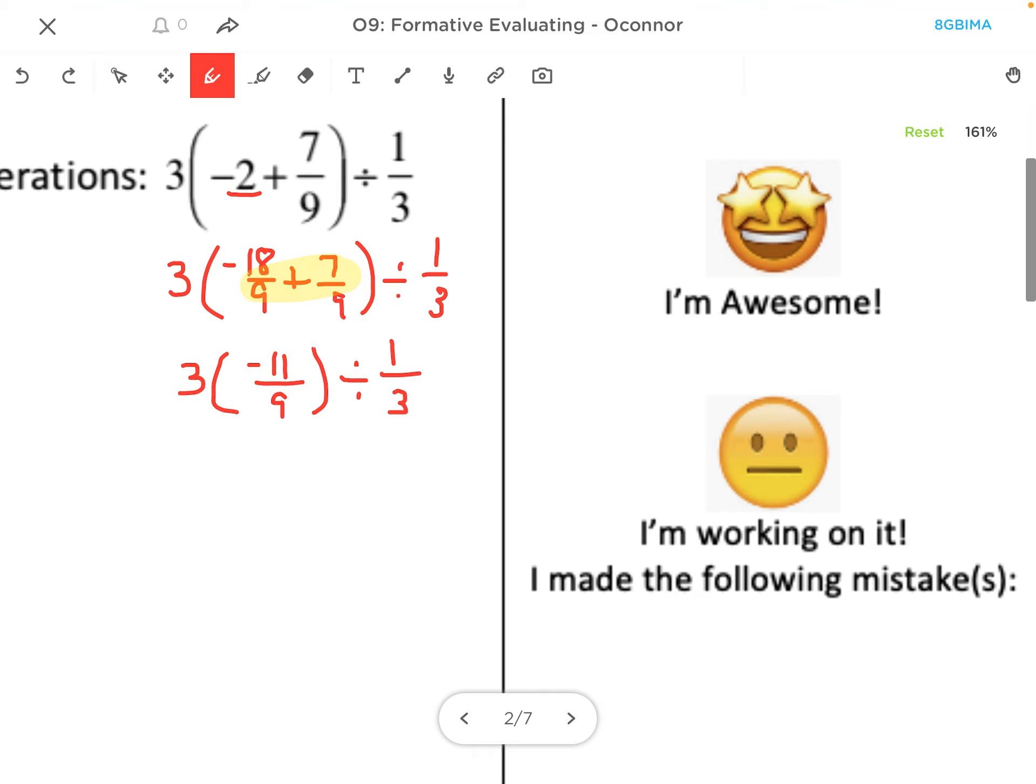So now I can move outside of the parentheses. I'm going to multiply 3 times negative 11 9ths. When I do that, I can reduce the 3 and the 9. 3 goes into 3 once, and into 9 three times, and then I multiply across the top. So 1 times negative 11 is negative 11, and multiply across the bottom, and that becomes negative 11 thirds.